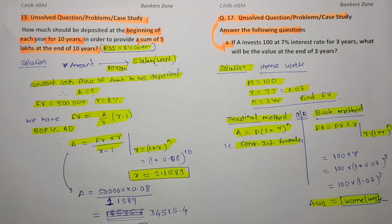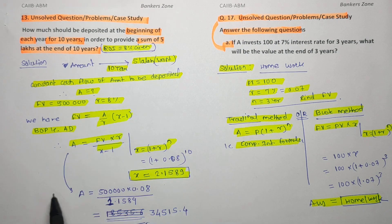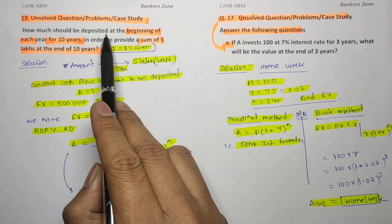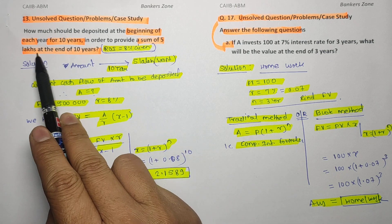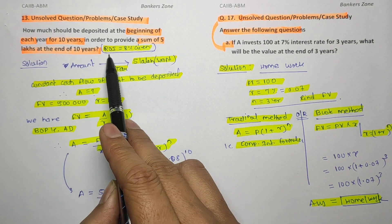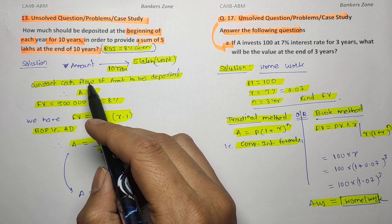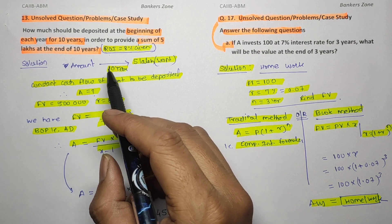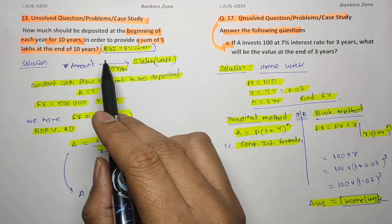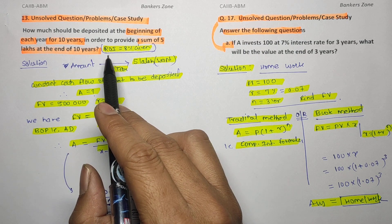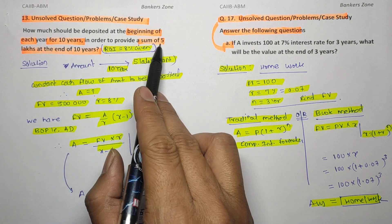The next unsolved numerical is number 13 from the Macmillan book. The question: how much amount should be deposited at the beginning of each year for 10 years to provide a sum of 5 lakh at the end of 10 years, at a rate of interest of 8 percent? Suppose a customer wants 5 lakh rupees after 10 years — how much should they deposit in an RD account annually?